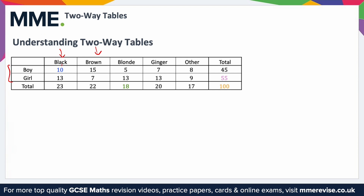So, what does the ten represent here? This represents ten boys, because it's in the boys row with black hair. What does the eighteen represent? It's in the total row and in the blonde column, so that means there are eighteen children with blonde hair.